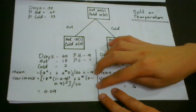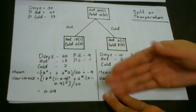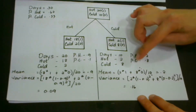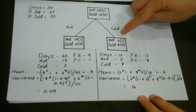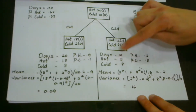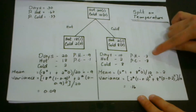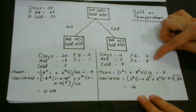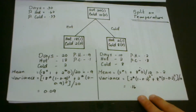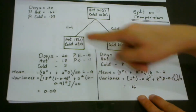For the second child node (cold, 10 days total): 2 days are hot and 8 days are cold. The probability of hot days is 0.2 and of cold days is 0.8. Computing the mean gives 0.2, and the variance is 0.16. You might ask why the hot child node still has some cold days — it's because classification is not perfect; there will always be some misidentification.